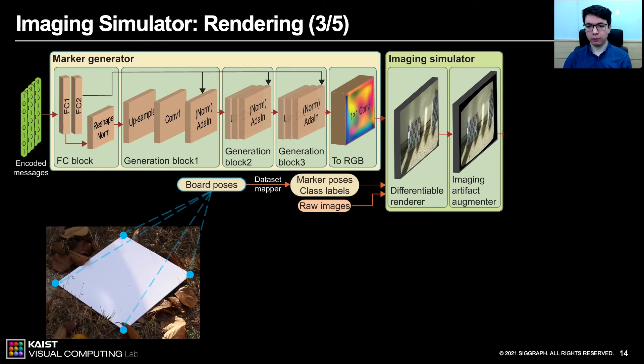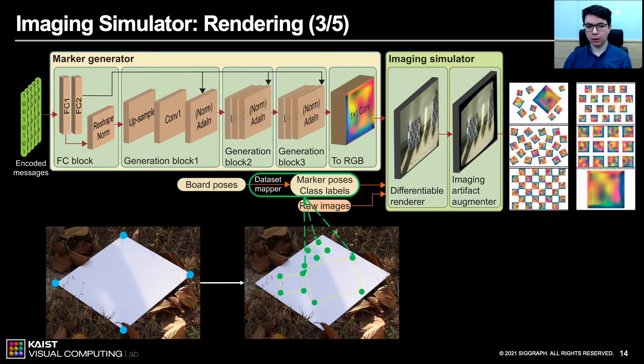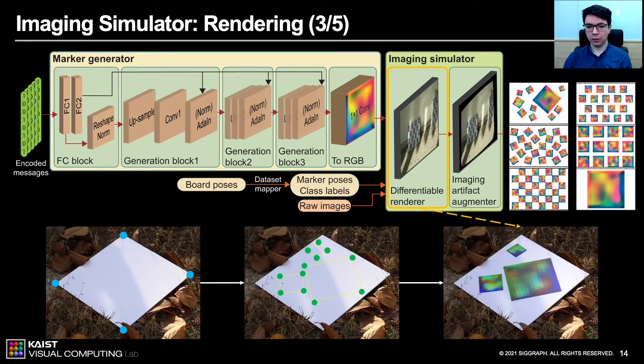During training, we load in-painted images with the board pose information. Next, our dataset mapper randomly selects the marker configurations on the board and decides where to place the markers. Finally, markers, target marker poses and raw images are passed to the renderer to produce the final training images.